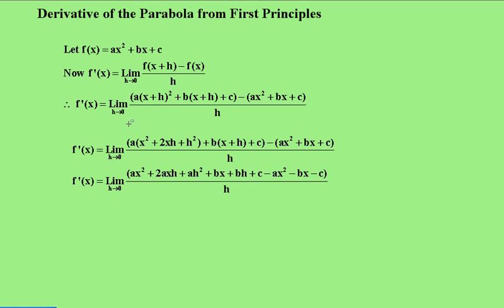And you can see this is what I've done here. The (x+h) squared becomes x squared plus 2xh plus h squared. And then on the next line, I've multiplied throughout by a.